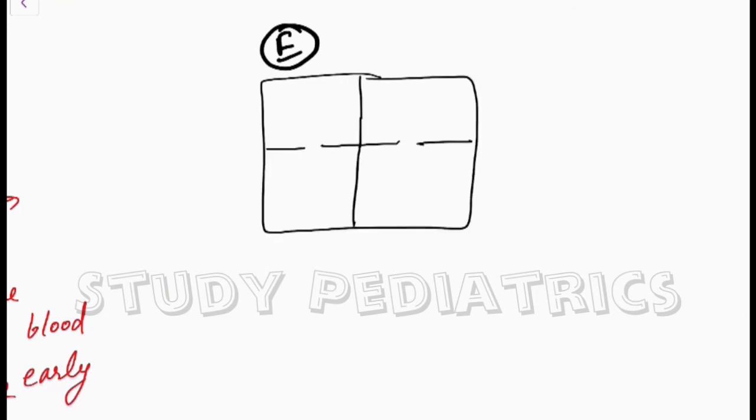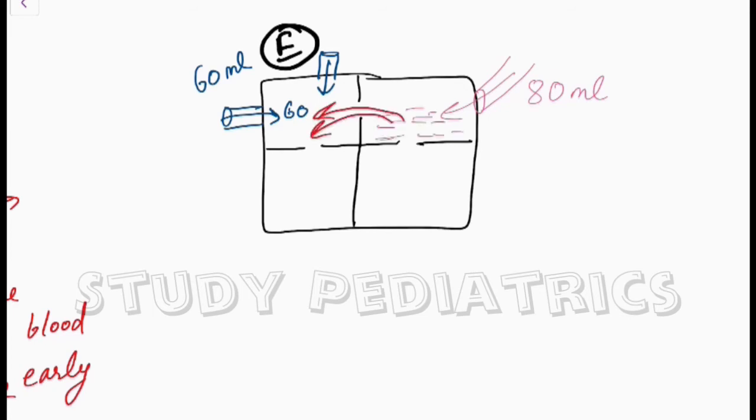Now let's see what happens during expiration. During expiration, there occurs 60 ml of blood from the right side and 80 ml from the left side. As discussed earlier, this 60 ml reaches the right chamber and out of that 80 ml on the left side, 40 ml pumps into the right chamber. Hence, the total blood in the right chamber becomes again 100 ml and in the left chamber it remains 40 ml only.